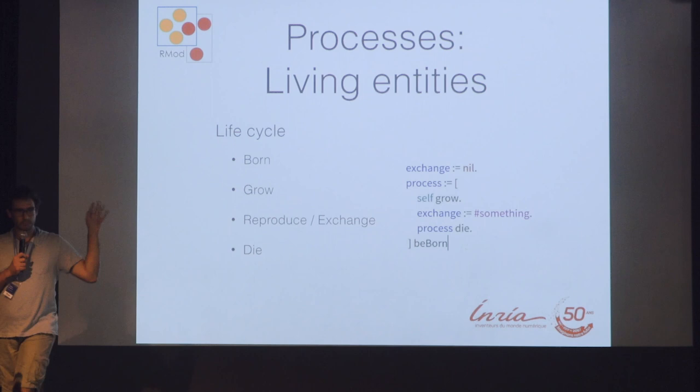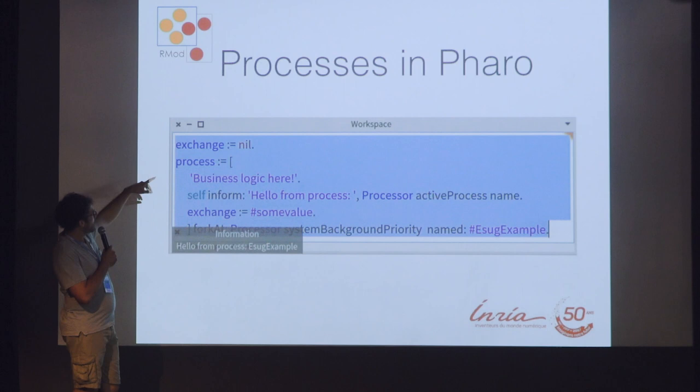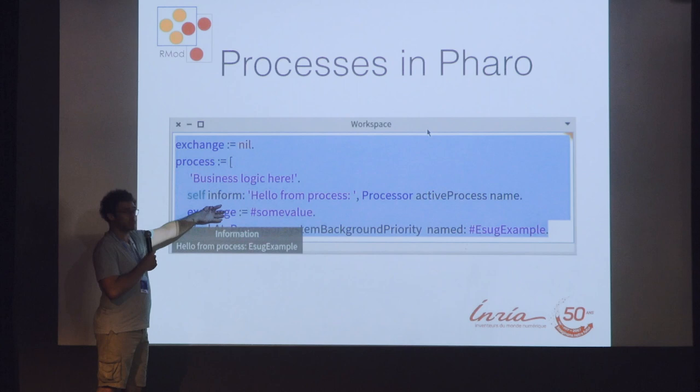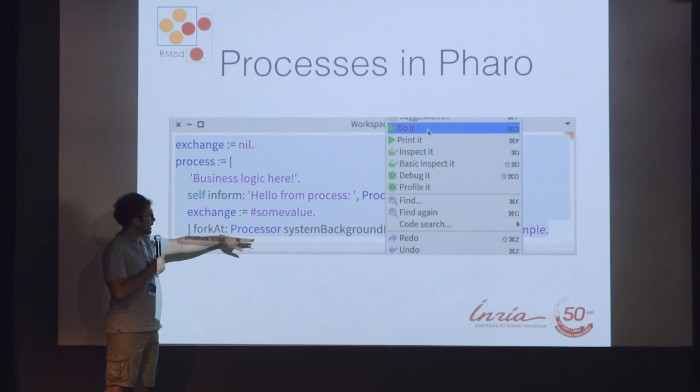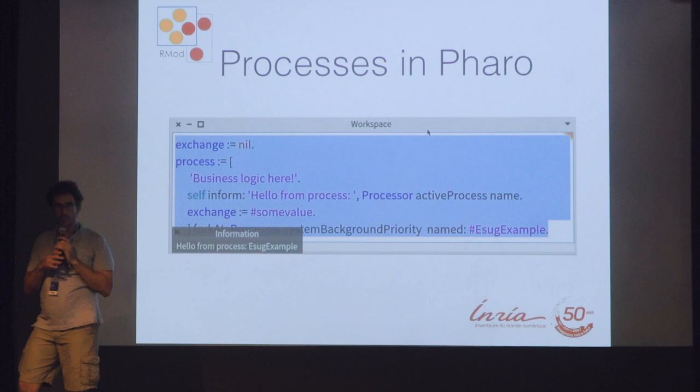In Pharo, and mostly most flavors of Smalltalk I think it's the same — how do you start a process? How do you write a process? You code a block with some business logic and you send the message fork at with some priority and some name for the process. In this case we are using a global variable for exchanging, something kind of nasty but there are not many ways to do it otherwise.